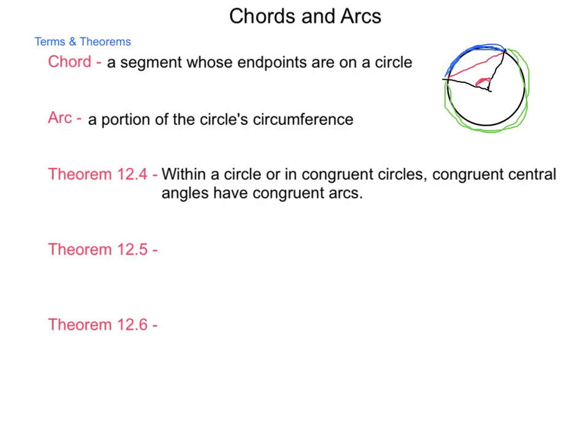So if I have two of these in the same circle, or two of them in congruent circles, then the arcs that they trace out, that minor arc, will be congruent as well. Now, again, this one does have a converse. So if the arcs are congruent, then that means that the central angles forming them would be congruent as well.